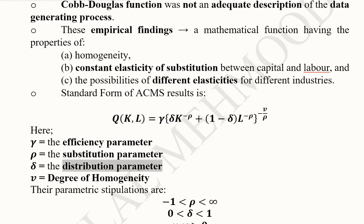We have the distribution parameter δ. If one factor of production has δ, the other has 1 - δ, showing the distribution. If δ = 0.5, then 1 - δ = 0.5. If δ = 0.3, then 1 - δ = 0.7. The distribution parameter allocates shares between the two factors of production.